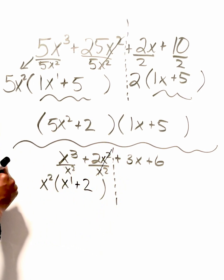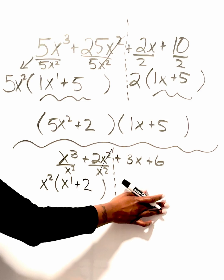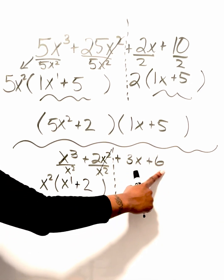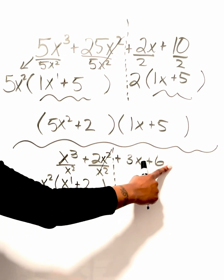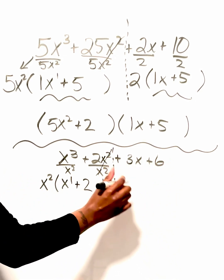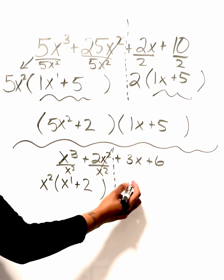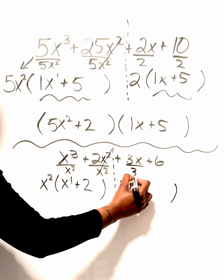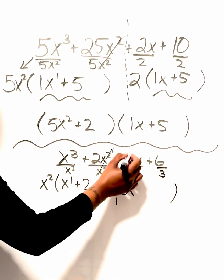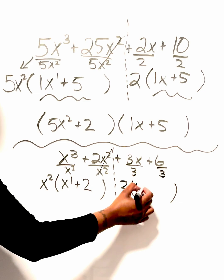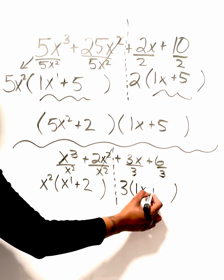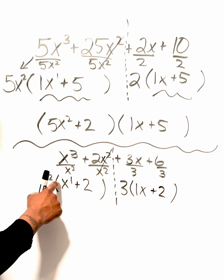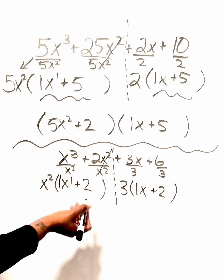On the right side we have a number and a number, so I can factor out a number. We only have one letter, so I'm only factoring out the numbers. The GCF between 3 and 6 is 3. Dividing by 3: 3 divided by 3 gives me 1, bring down the x, and 6 divided by 3 gives me 2. If you have a variable by itself with no coefficient, you can place a 1 there as a placeholder.